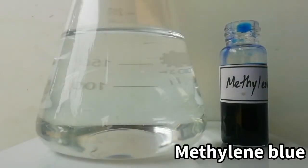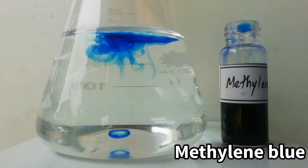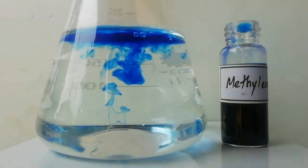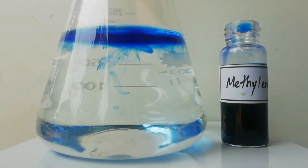Now add 1 milliliter of methylene blue solution. When it mixes with the basic glucose solution, the blue color will disappear.